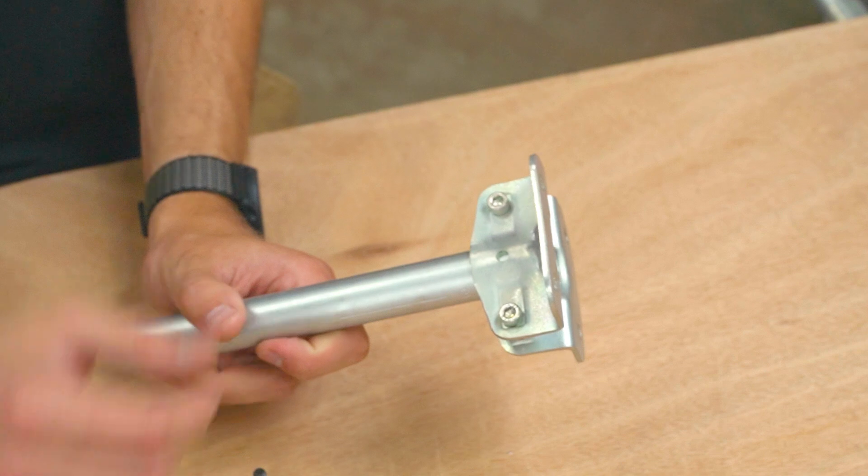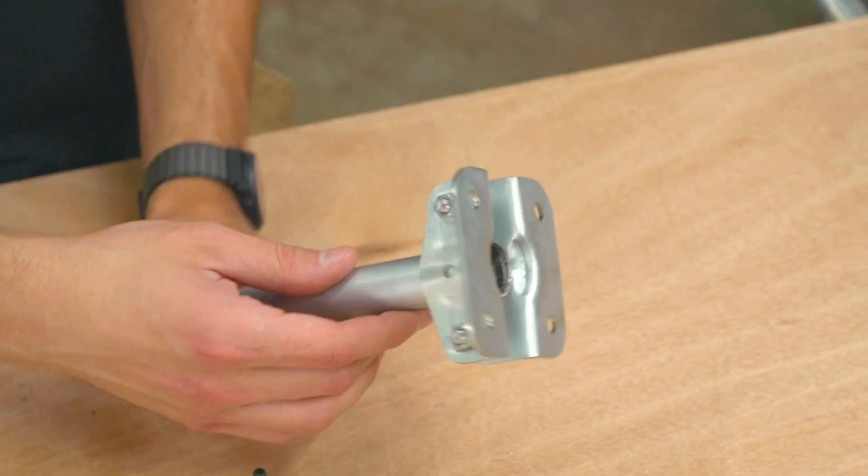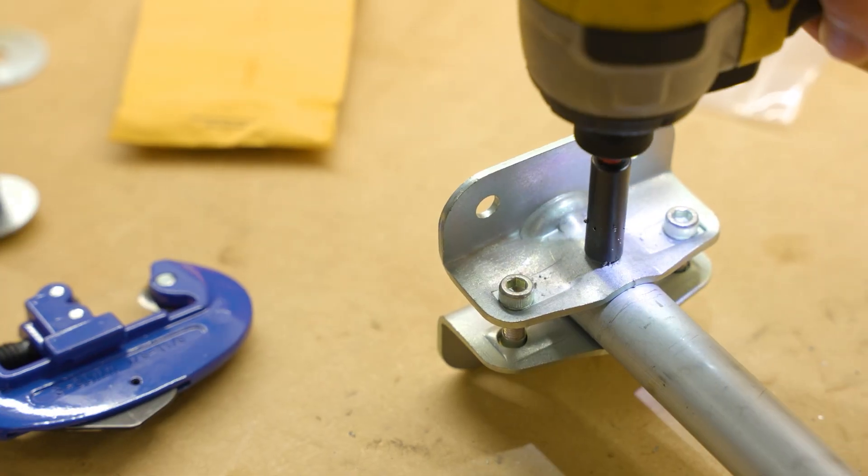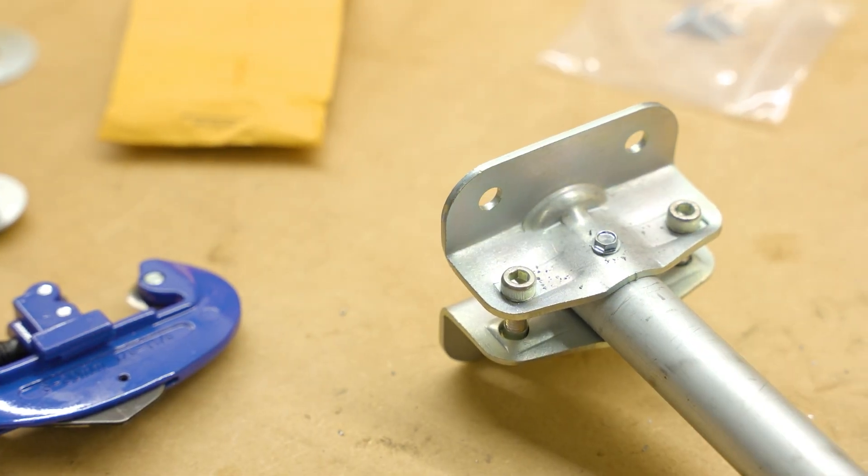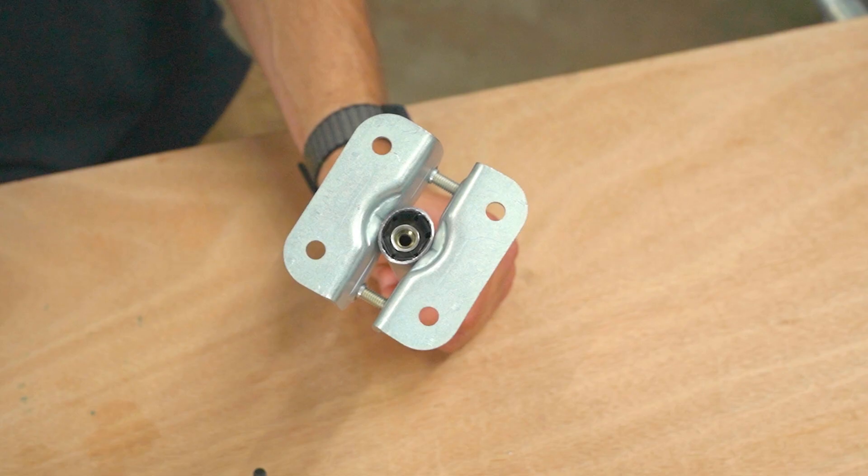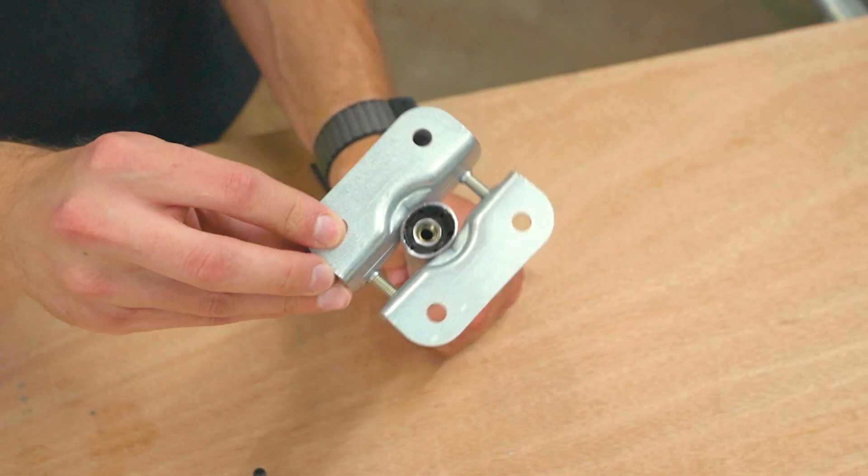You'll notice that we have some pre-drilled holes in the connector pieces that you can use to add number eight by half inch self-drilling screws. And that'll help with reinforcing this connection, but you can also use a hidden hack to reinforce this even more.